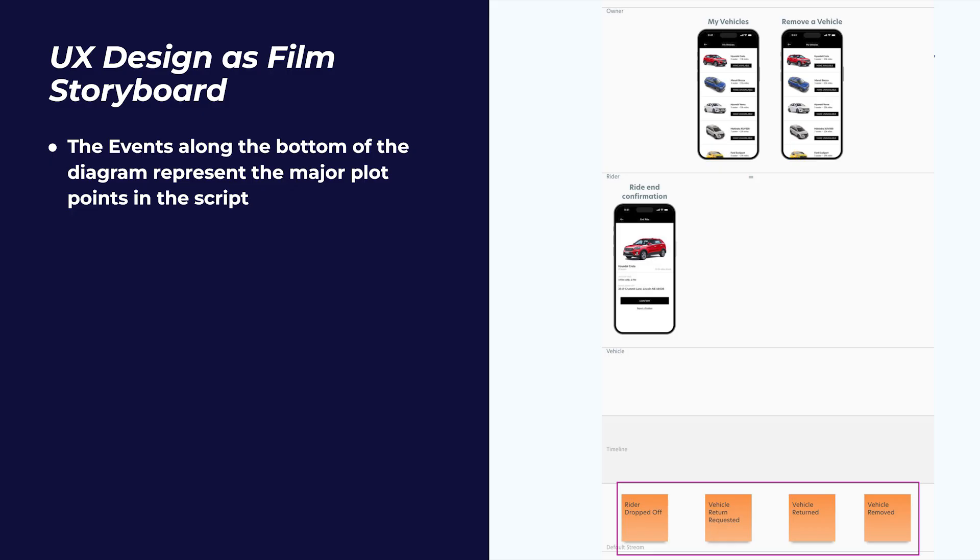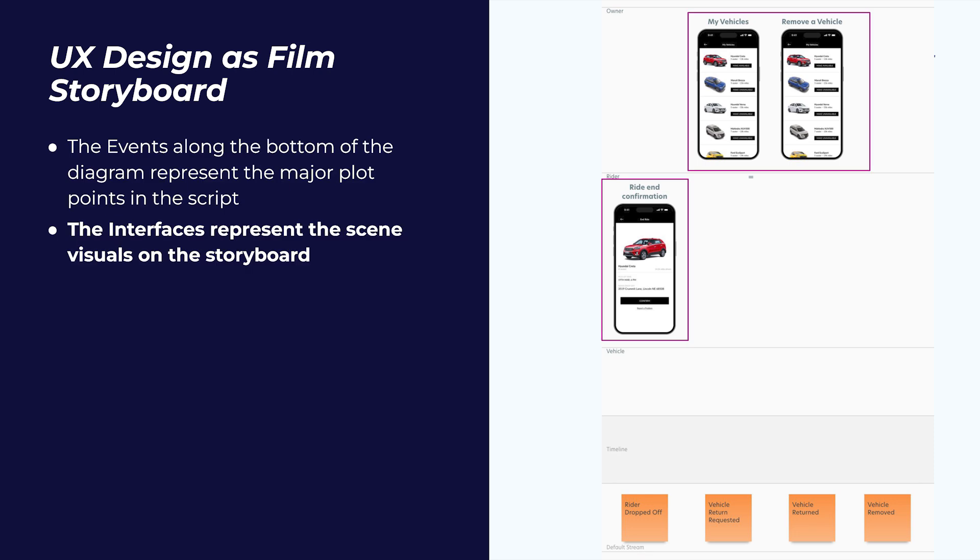Event modeling is a visual medium that somewhat resembles another tried-and-true visual design medium: the storyboard of a film. The events that we discovered and sequenced along the bottom of our diagram in the previous step represented the major plot points of the script. In this step, we'll place interfaces consisting of graphical mock-ups of our UIs along the top of our diagram above their corresponding events, and these interfaces represent the frames containing concept scene visuals in a storyboard.